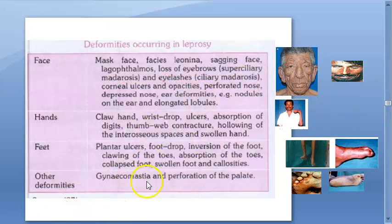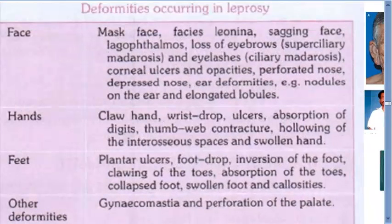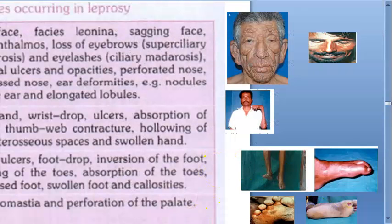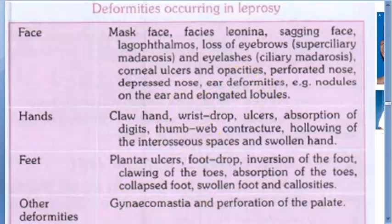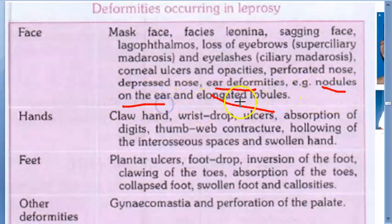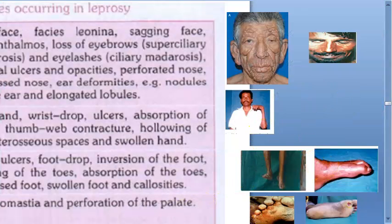Corneal ulcers can lead to corneal opacities and eventually blindness. There can also be a perforated nose and depressed nose. Regarding the ear — because the bacteria likes cold places — it can go to the ear lobules, causing ear deformities: elongated lobules and nodules on the ear.